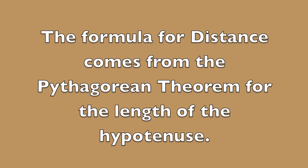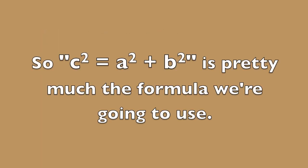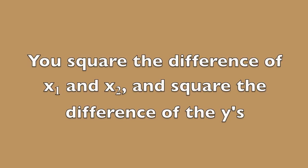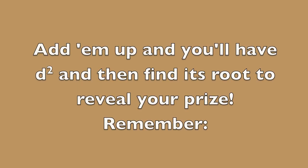The formula for distance comes from the Pythagorean theorem for the length of the hypotenuse. So c squared equals a squared plus b squared is pretty much the formula we're going to use. Square the difference of x1 and x2, and square the difference of the y's, add them up and you have d squared, then find its root to reveal your prize.